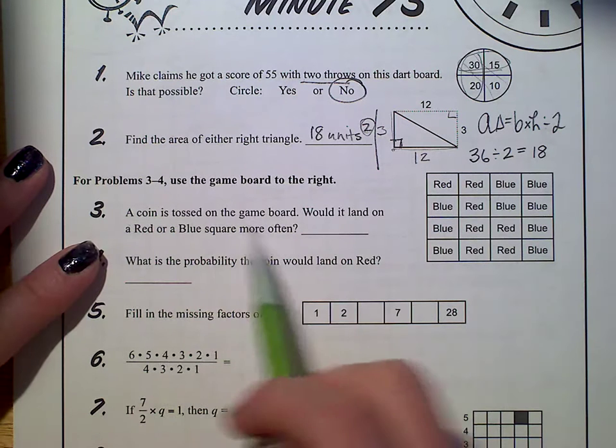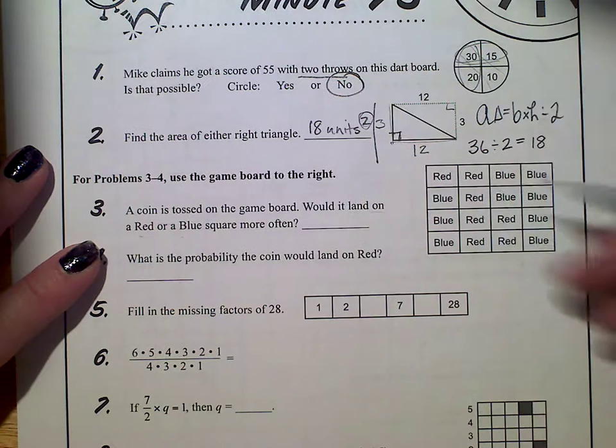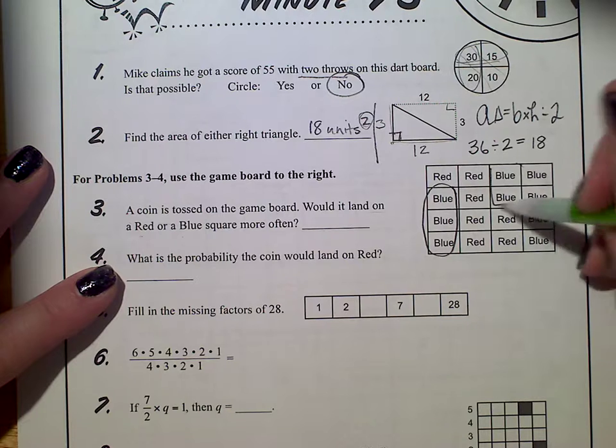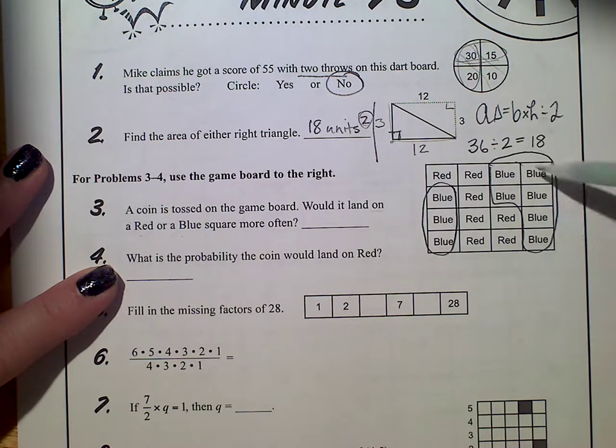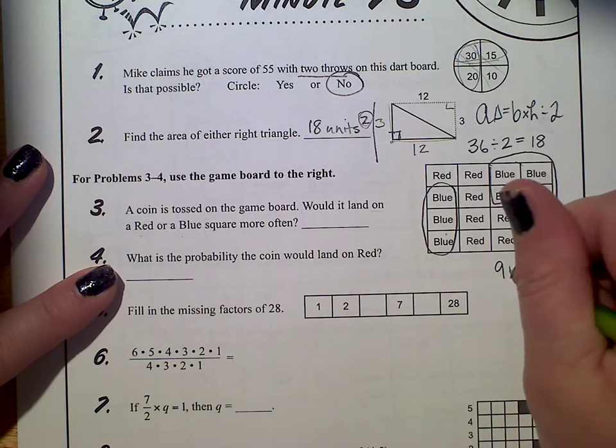A coin is tossed on the game board. Would it land on red or blue square more often? So basically you're counting up the blue, which is right here. So we have four, five, six, seven, eight, nine. So I have nine blue.